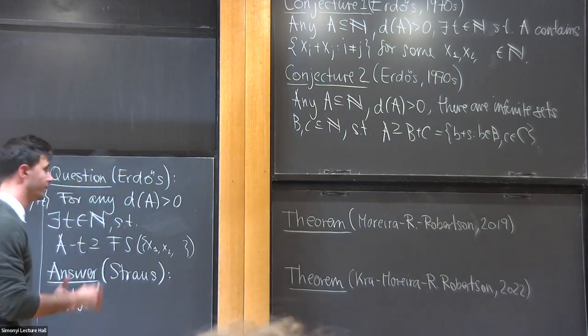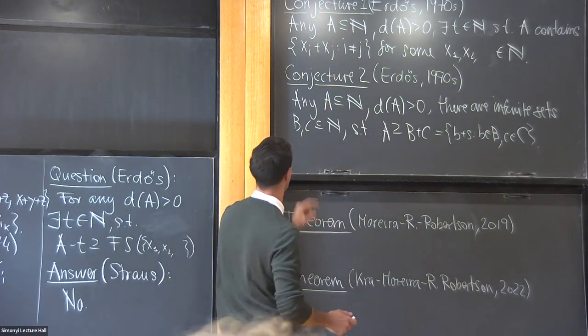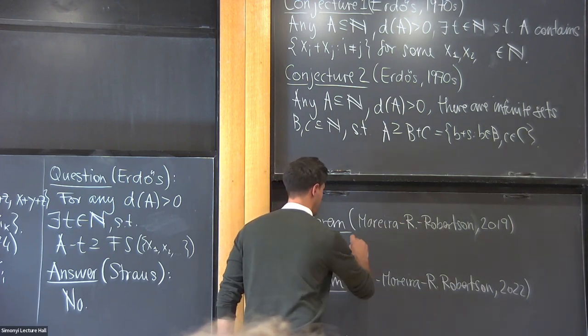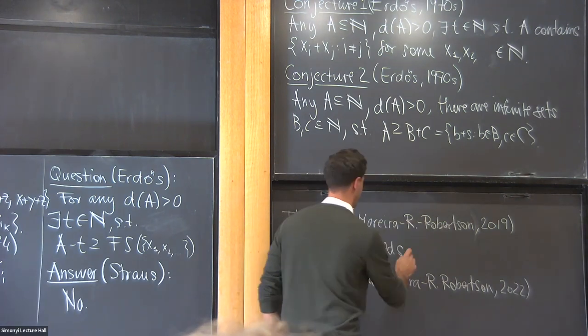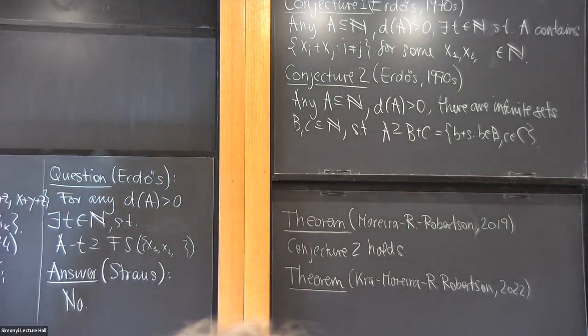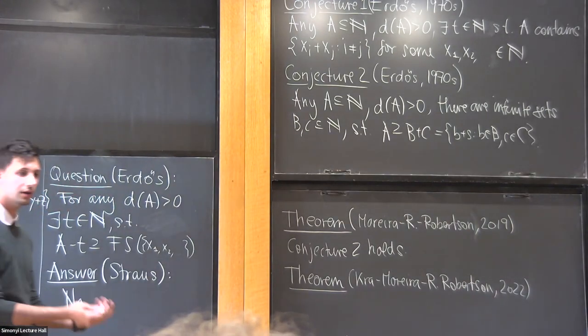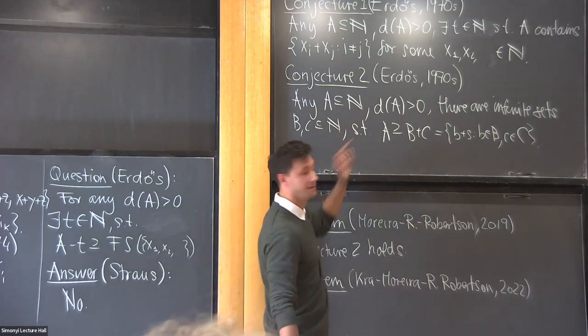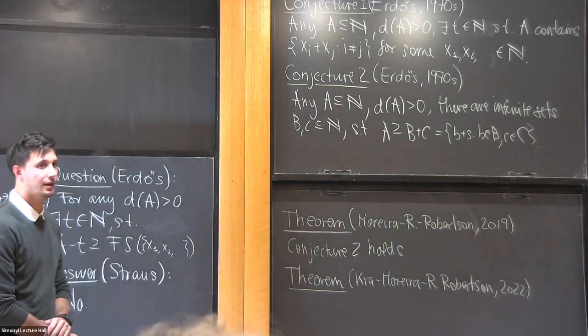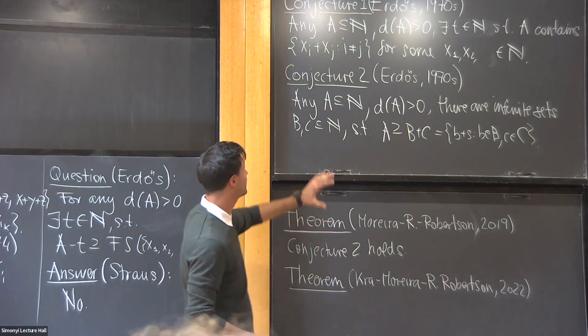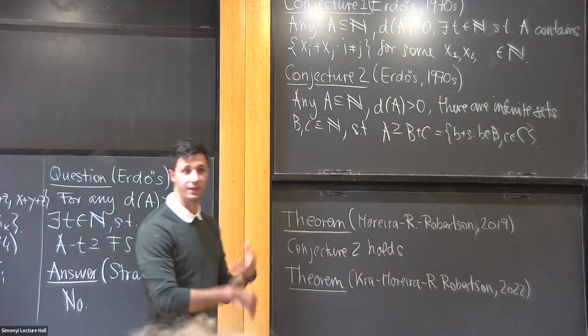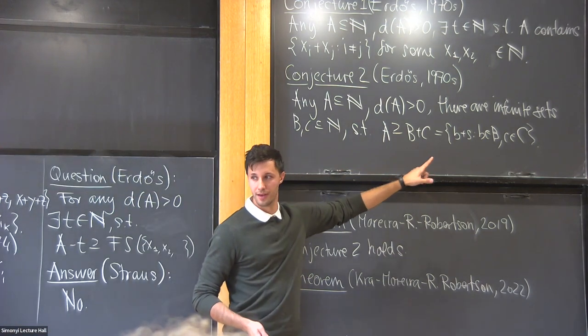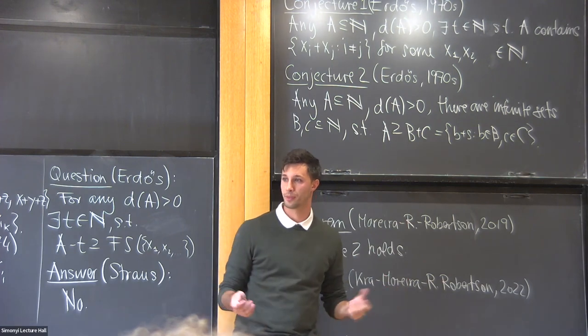Okay, and so let me tell you about some of the results. In 2019, we were able to resolve the weaker of the two, conjecture two. We used ergodic theory and some ideas from Fourier analysis to find two infinite sets B and C such that the sum set is in A. And then this prompted the question: well, can our techniques give conjecture one? And something else that's very natural to ask: well, if A contains the sum of two infinite sets, maybe it contains the sum of three infinite sets.